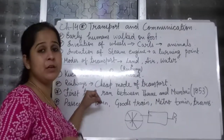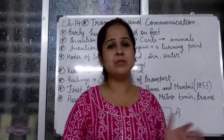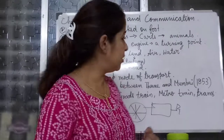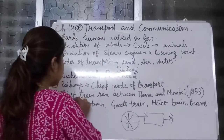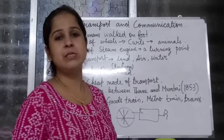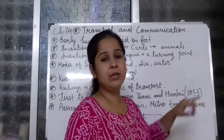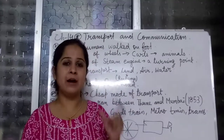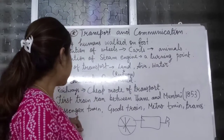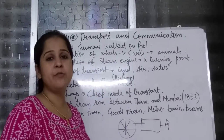Railways is one of the cheapest modes of transport — it was one of the earliest means of transport invented. The first train ran between Thane and Mumbai, which was started in the year 1853, and it is part of Maharashtra. Types of railway include the passenger train, goods train, metro train, and tram.